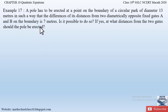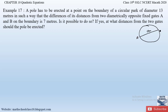Is it possible to do so? If yes, at what distances from the two gates should the pole be erected? To understand the question: there is a circular park with a diameter of 13 meters. There are two gates A and B fixed diametrically opposite on this circular path — gate A at one end of the diameter and gate B at the other end.